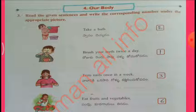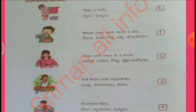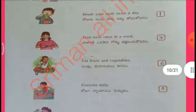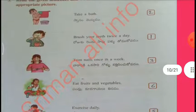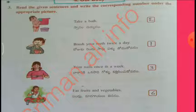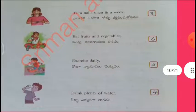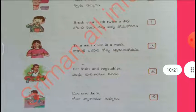Read the given sentences and write the corresponding number under the appropriate picture. Take bath — brush your teeth twice a day — trim nails once in a week — eat fruits and vegetables — exercise daily — drink plenty of water. Order: 1st — brush your teeth twice a day, 2nd — take a bath, 3rd — trim nails once in a week, 4th — drink plenty of water, 5th — exercise daily, 6th — eat fruits and vegetables.